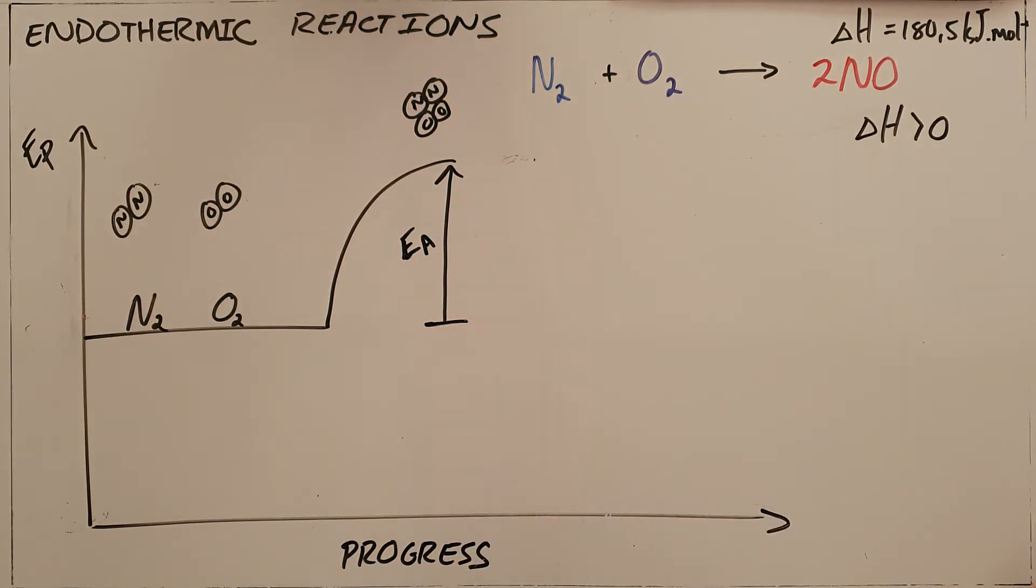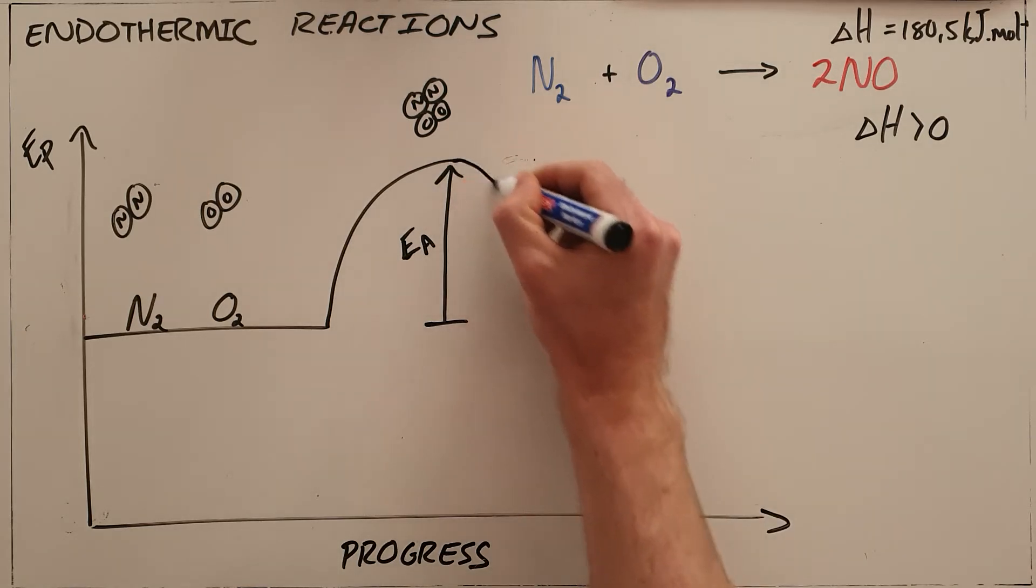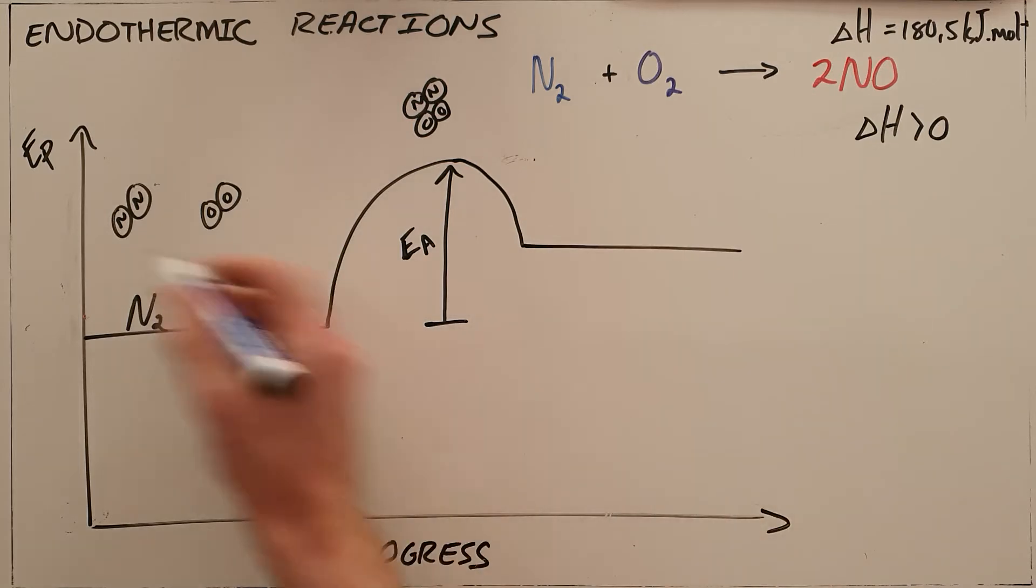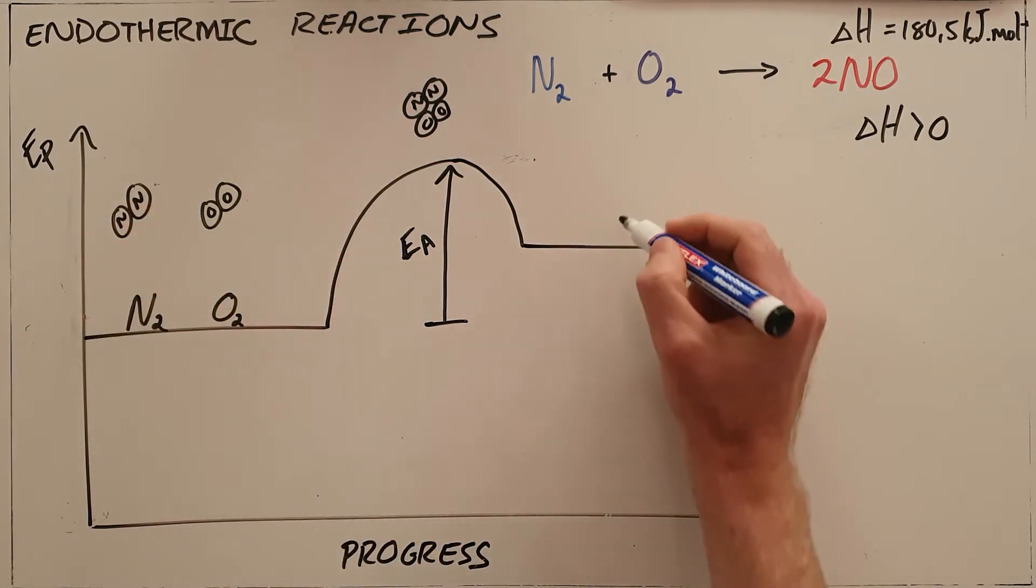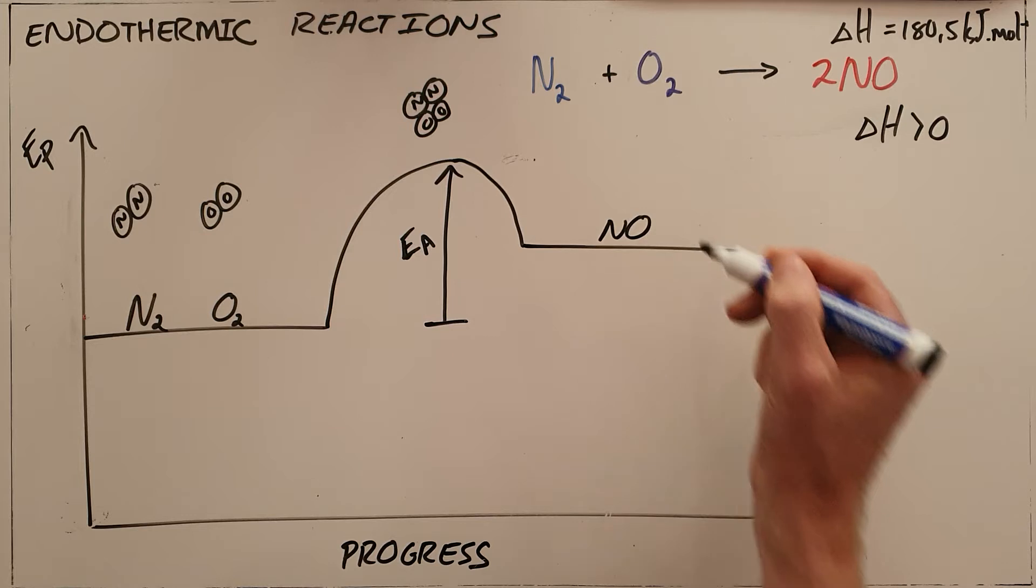In an endothermic reaction, we will find that the products that are formed have a higher potential energy than the reactants. The product here, nitrogen monoxide, as we can see, has a higher potential energy than our reactants.